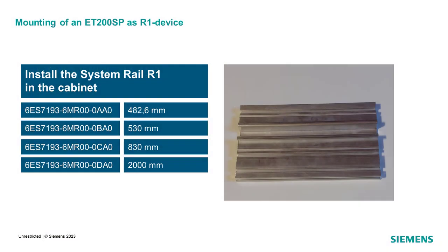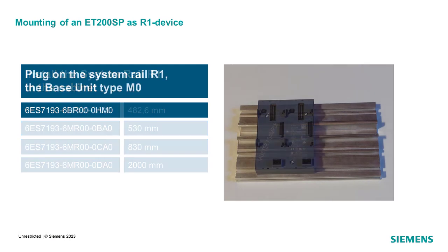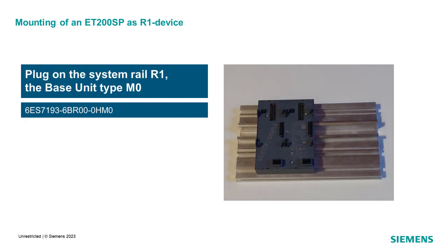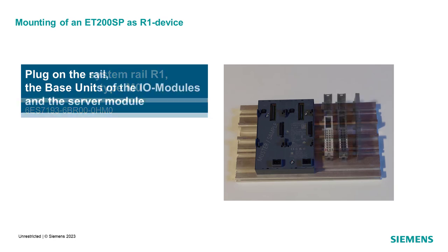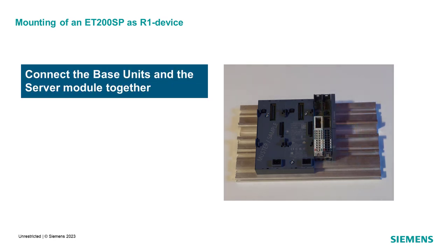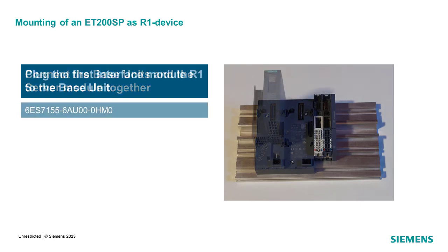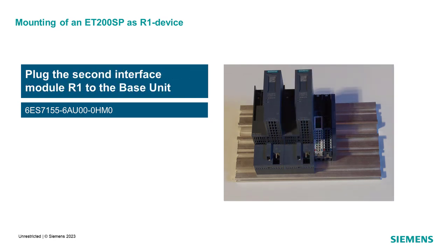First, install the system rail R1 in your cabinet. Different lengths are available. Plug on the rail the base unit type M0, dedicated for ET200SP R1 configuration. This one has two slots for the redundant interface module connection. Plug also on the rail all base units of the I/O module configuration, as well as the server module. At this step, every base unit required for the customer application is connected together.